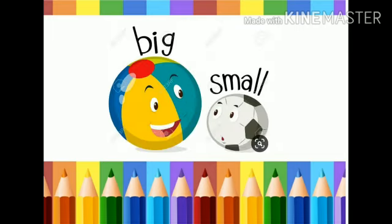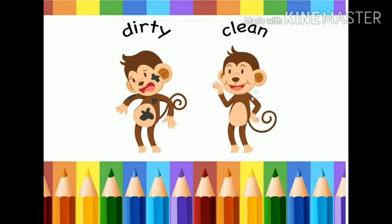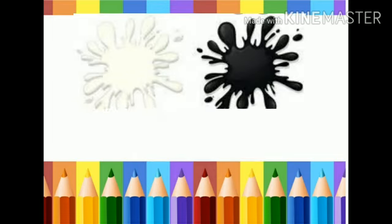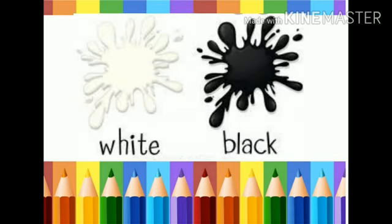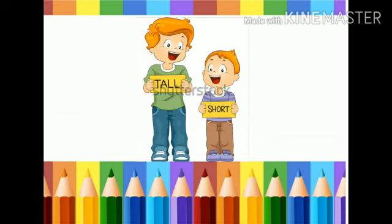Tenth one: big and small. Eleventh one: dirty and clean. Twelfth one: white and black. Thirteenth one: tall and short.